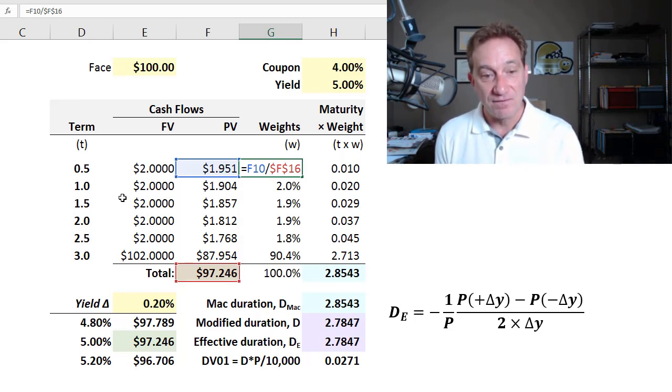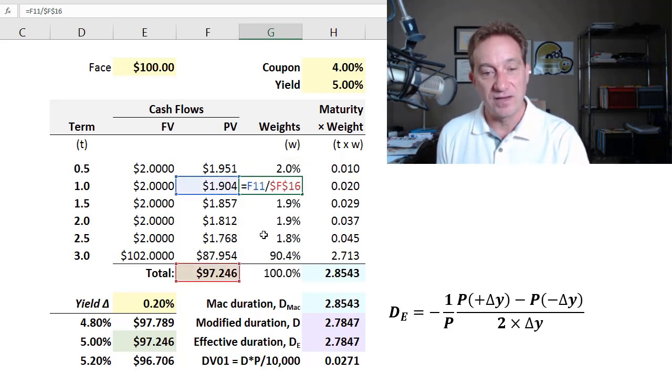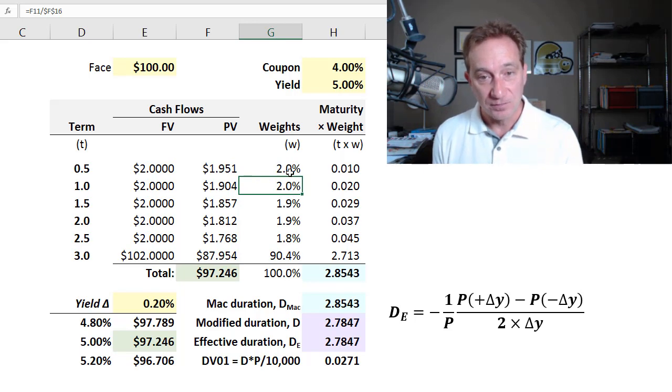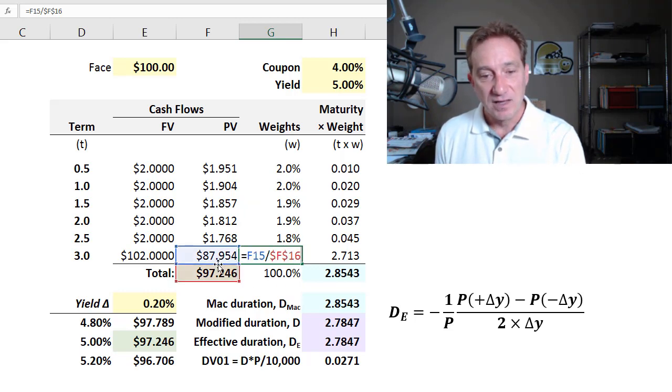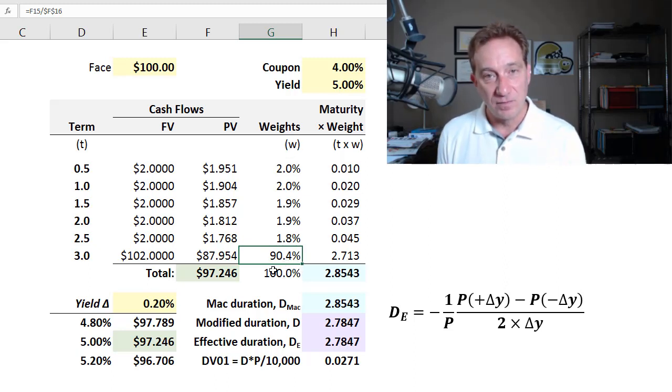And the weight of the second coupon is about 2% as well. And for a vanilla bond like this, we'll have low weights until we get to the final cash flow. The present value of that cash flow as a percent of the bond's price is most of the weight, in this case, 90%. And so that's the weights that inform the definition of the Macaulay duration, which is the bond's weighted average maturity.